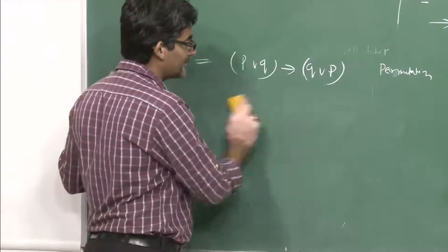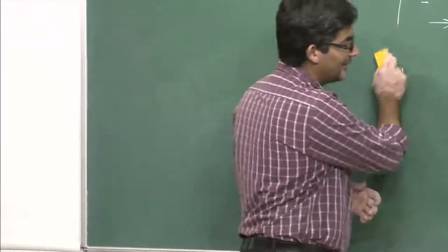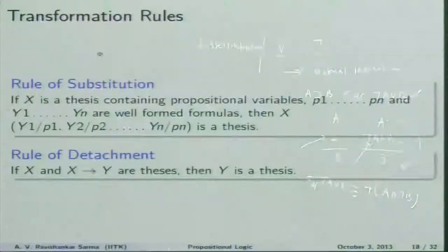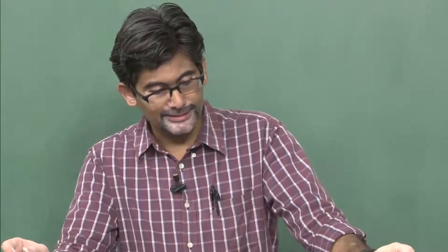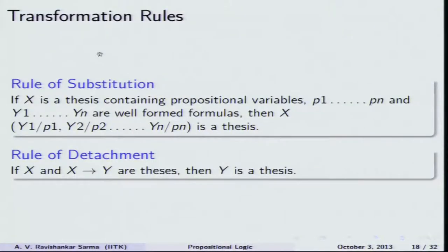The rule of modus ponens (rule of detachment): if X and X implies Y are both theses (both assumed true), then Y is also a thesis. These are the minimal transformation rules required in the axiomatic system.